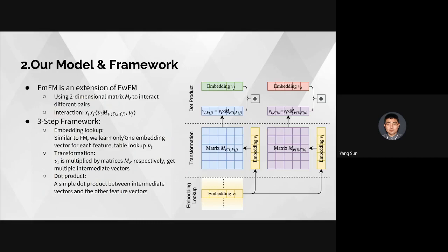There are three steps. The first step is embedding lookup — similar to the factorization machine, we learn only one embedding vector for each feature and use a table lookup for feature i. In the second step, we apply a transformation where vi is multiplied by matrix F to get multiple intermediate vectors. For example, the yellow vector embedding vi is transferred to intermediate vector vi for field j, and the purple vector vi for field k.